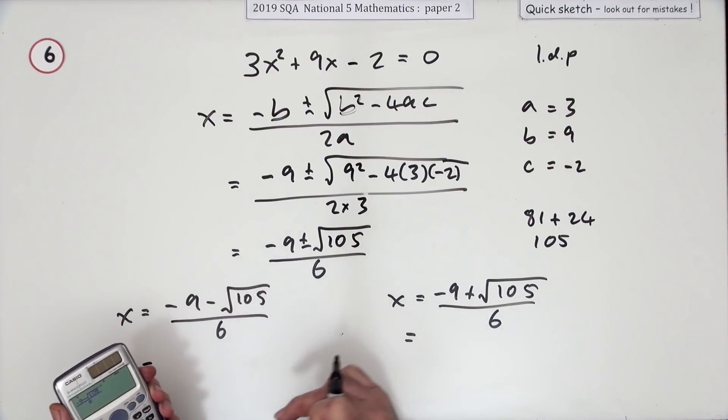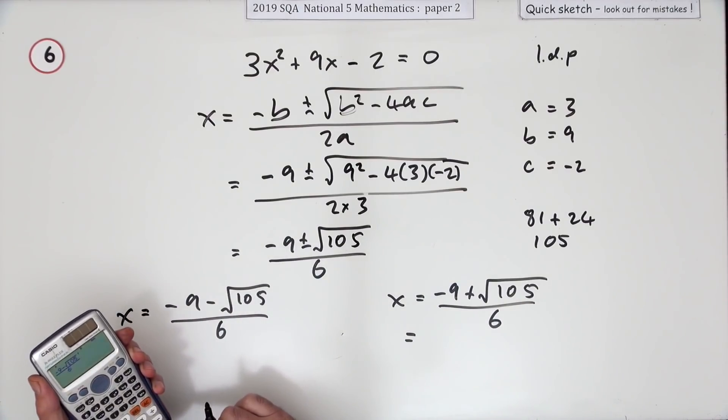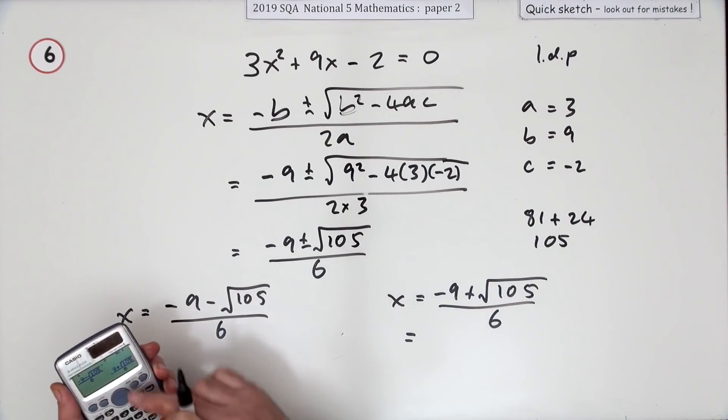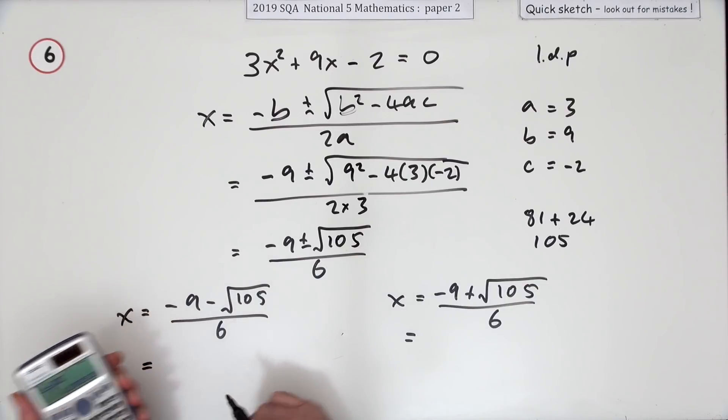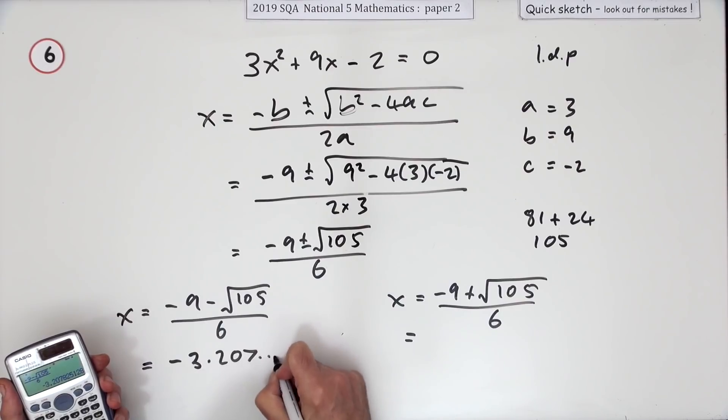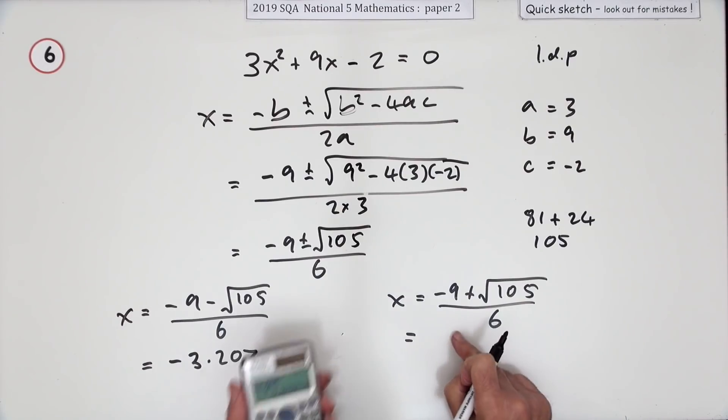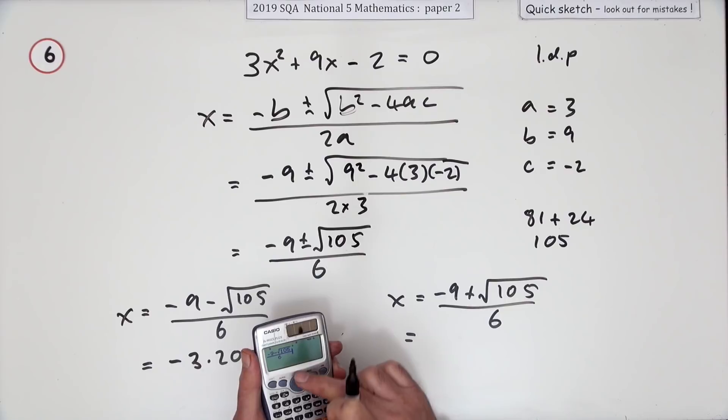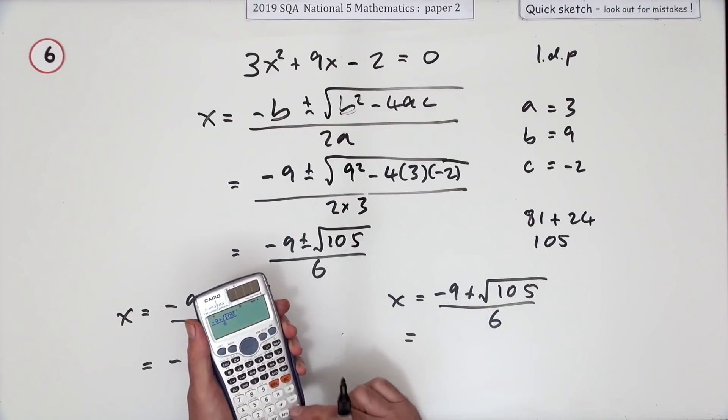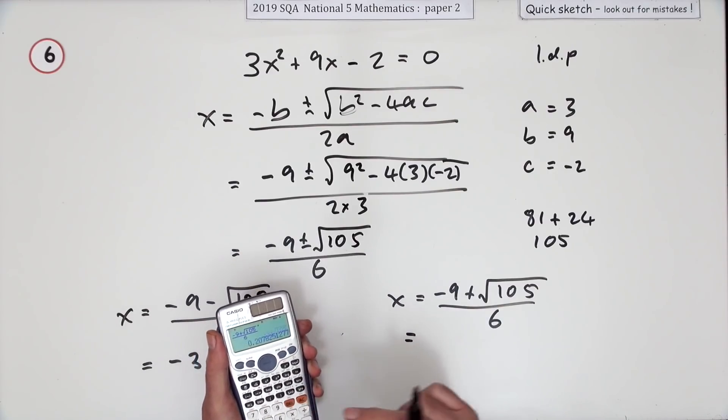So you type it into your calculator, make sure it looks exactly the way it does there, press equals. Then you have to press equals again because of course it keeps it exact and it looks as if it's done nothing. Press it again and you've got this: negative 3.207 and so on. To do this one, you just go back and change that minus to a plus, then you press the button again.